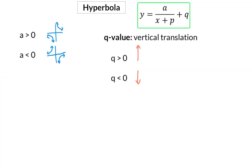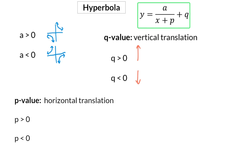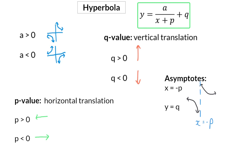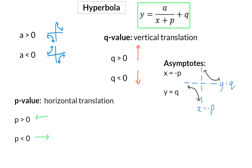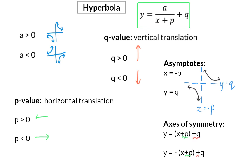To sum up: the a value indicates whether we are working in the first and third or second and fourth quadrant. The q value shows the vertical translation, and the p value indicates the horizontal translation — positive p moves the graph to the left, negative p moves it to the right. A hyperbola has two asymptotes that translate according to p and q: the vertical asymptote at x equals minus p, and the horizontal asymptote at y equals q. The two axes of symmetry also undergo the horizontal and vertical translations.